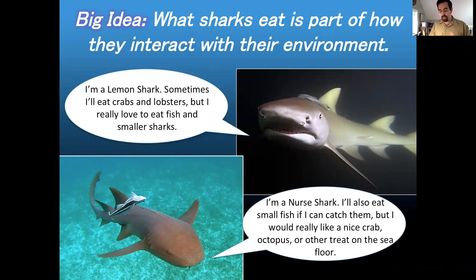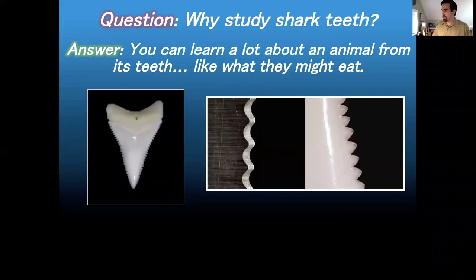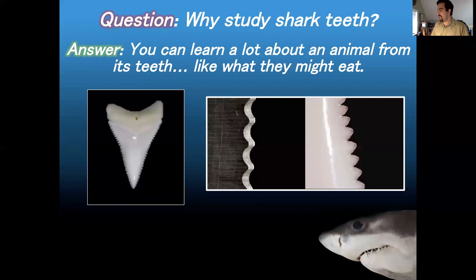Sometimes people will ask me: if you're so interested in feeding, why do you pay attention just to teeth? I don't just pay attention to teeth, but shark teeth are very important because you can learn a lot from them. Here's a great white shark tooth — you can see a real similarity between the serrations on the side of a great white shark's tooth and the serrations on a bread knife. That's not a coincidence. We use bread knives to cut through bread, and saws also have serrations. Looking at a shark tooth gives you a general sense of what that shark might eat.